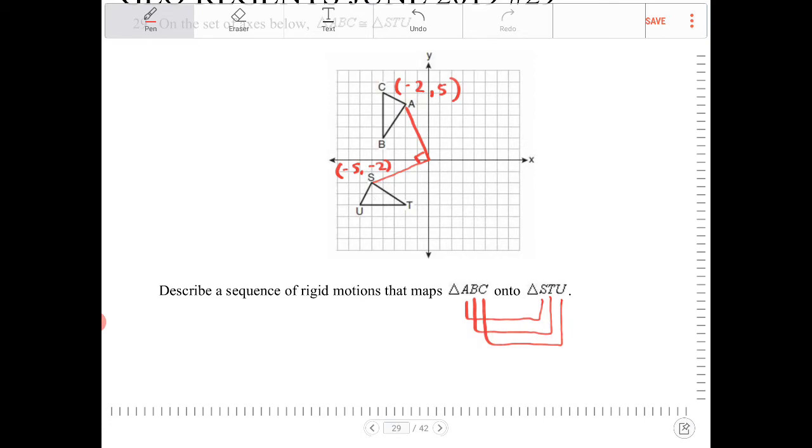So here, describing a sequence of rigid motions that maps ABC onto STU, I would say there is a 90 degree rotation over 0, 0 of triangle ABC. And the result is STU.